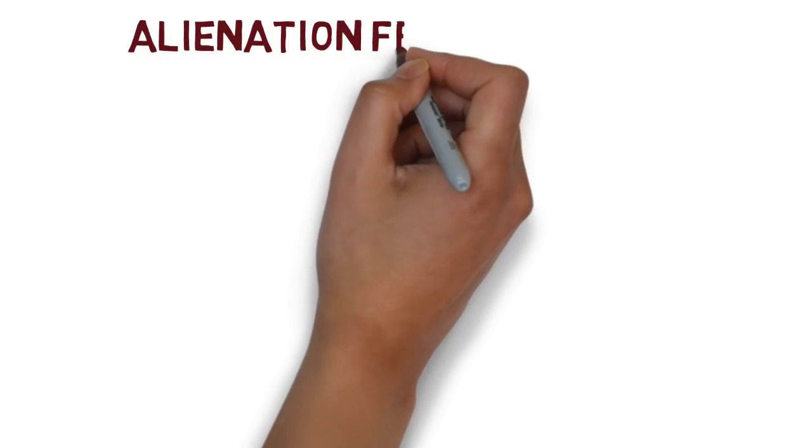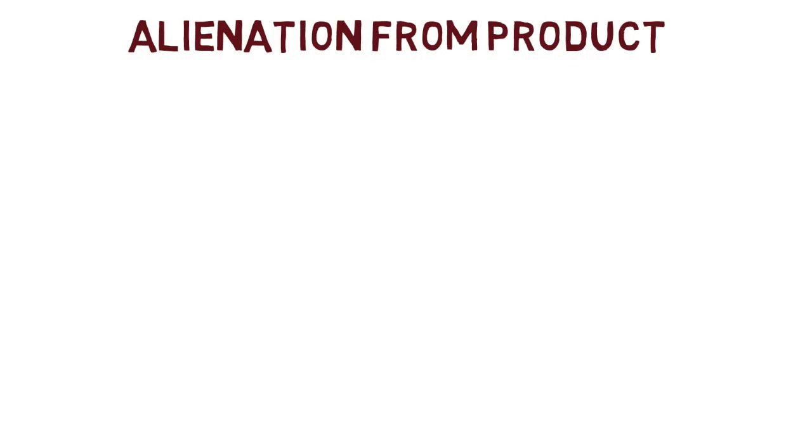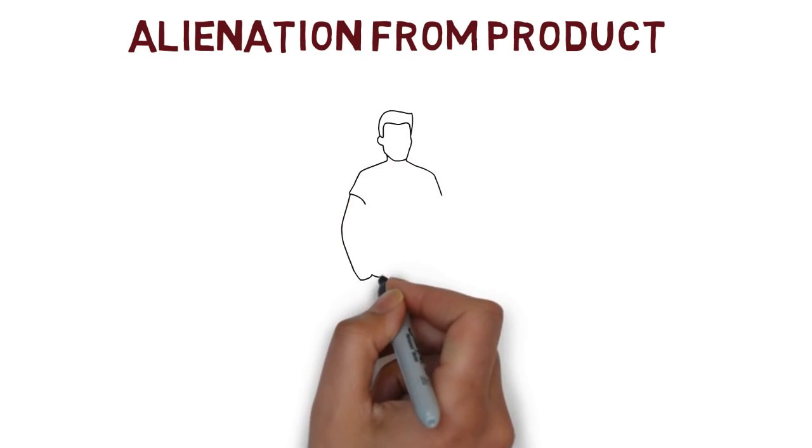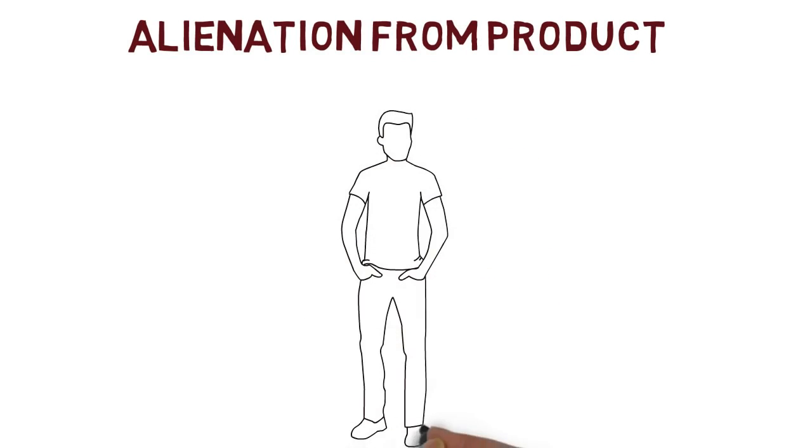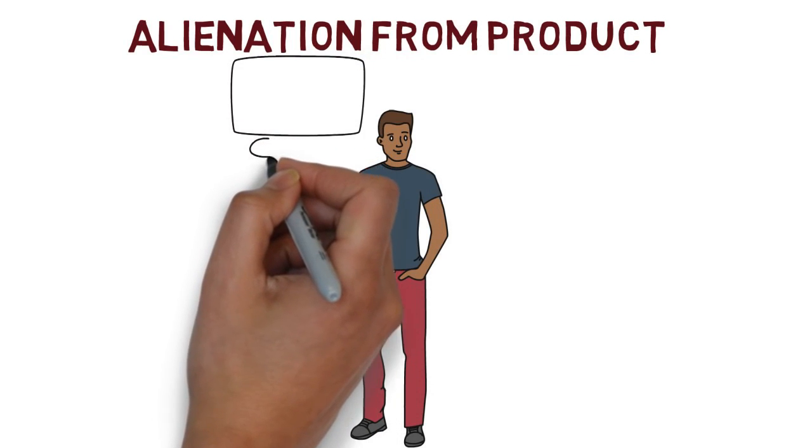The first is alienation from the product. In Marx's time, and in today's modern world, we engage in a lot of mass production. In our capitalist system, people are often placed in positions where they are responsible for making a small part of the product or engage in a very specific job.